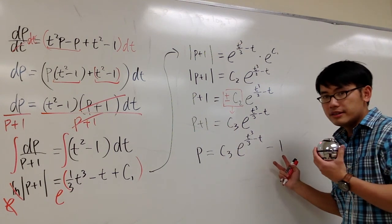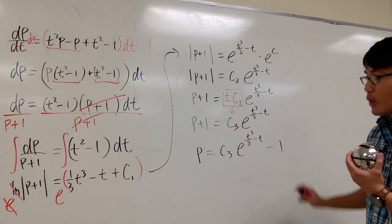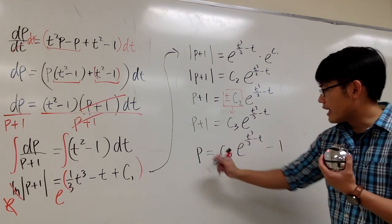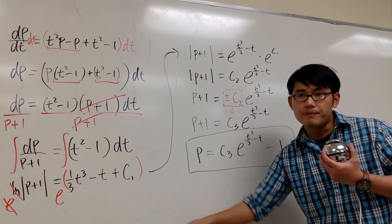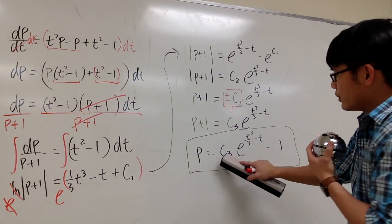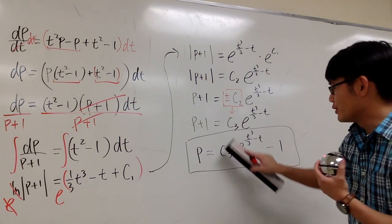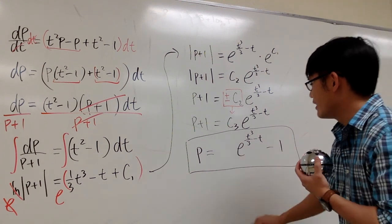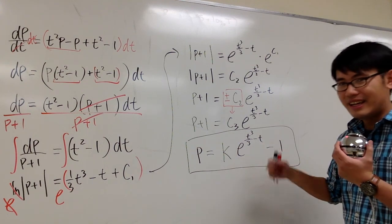This is not part of the exponent. This is just a regular minus 1. And then we are done. So, we can box the answer. And if you leave this answer on the test, it's totally fine. But then, once we are done, we look at the constant, which we have c3, right? The book likes to just replace this with a number k. So, we'll do that right here. So, that was the constant. And this is it.